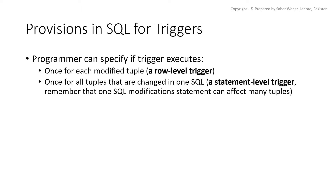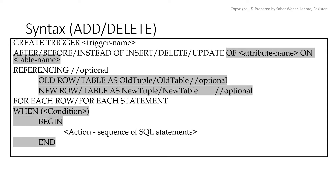A statement-level trigger is executed once whenever a statement of the appropriate type is executed, no matter how many rows — zero, one, or many — it affects. For instance, if we update an entire table with the SQL UPDATE statement, a statement-level update trigger would execute only once, while a row-level trigger would execute once for each tuple to which an update was applied.